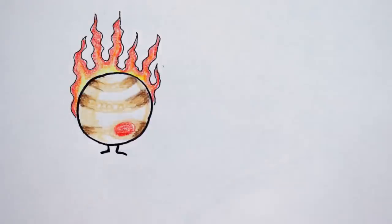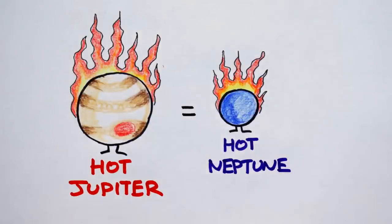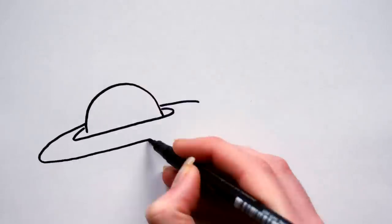Hot Neptunes are identical to hot Jupiters, only with masses and compositions comparable to Neptune and Uranus. Hot Saturns though are a little bit different.